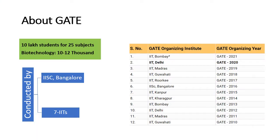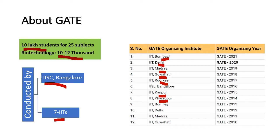GATE, that is Graduate Aptitude Test in Engineering, every year around 10 lakh students appear for 25 different subjects. Out of this, the Biotechnology stream varies between 10,000 to 12,000. The GATE exam is conducted by IISc Bangalore and top seven IITs like Mumbai, Delhi, Madras, Guwahati, Roorkee, Kanpur.